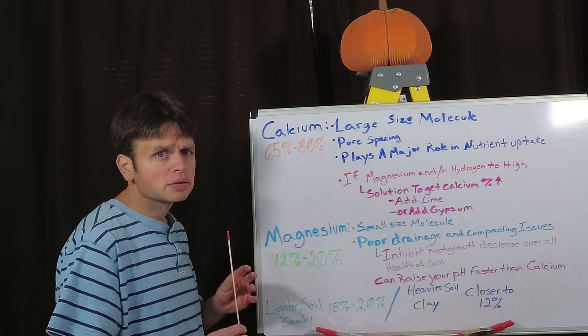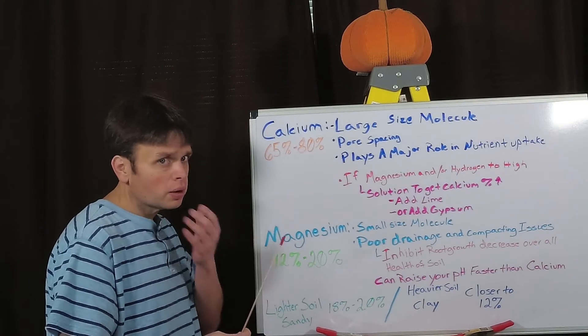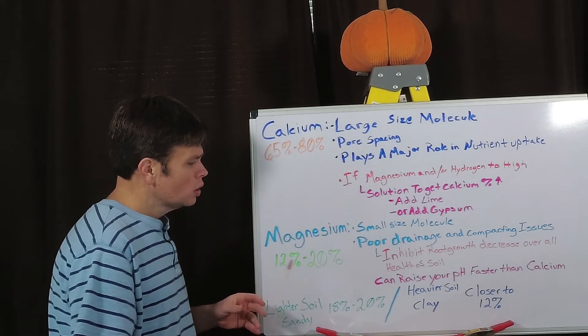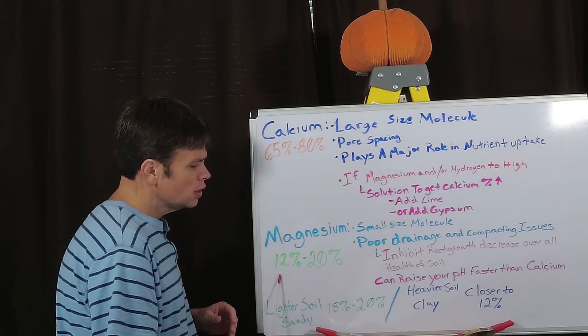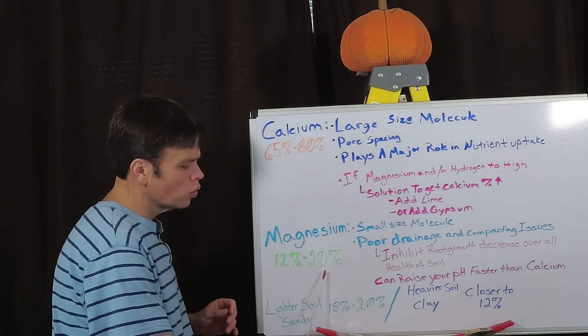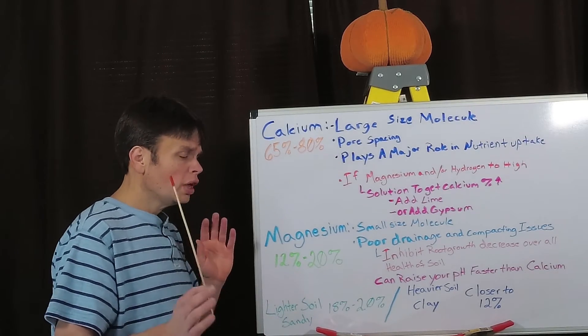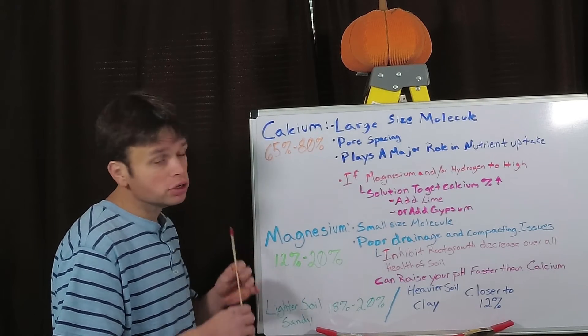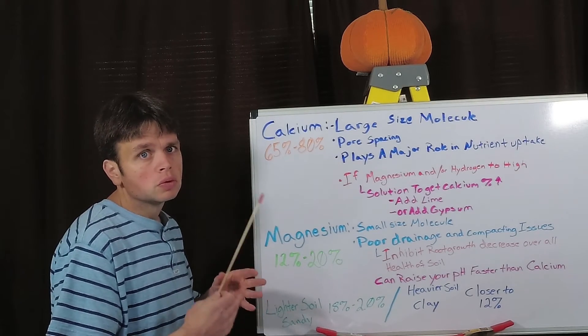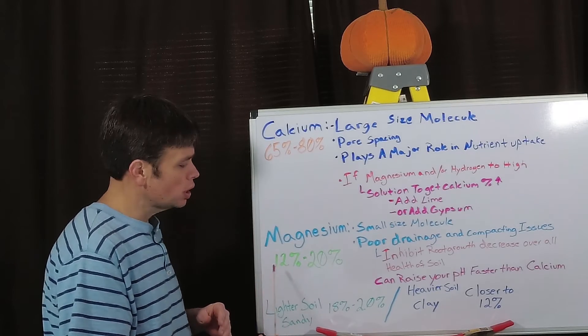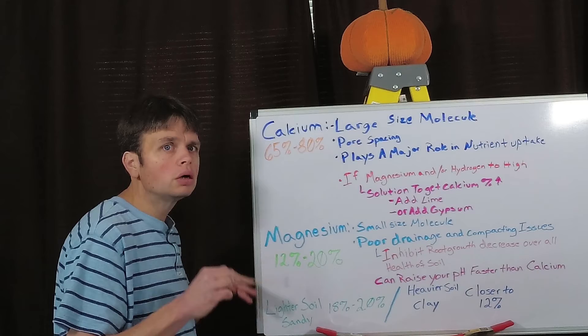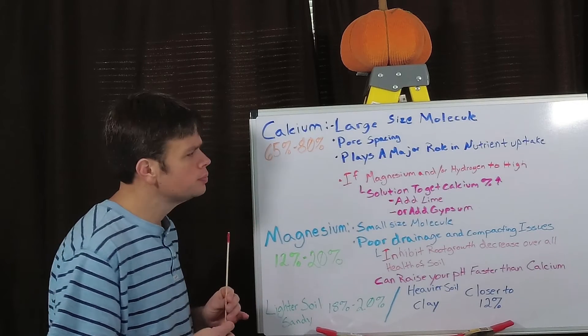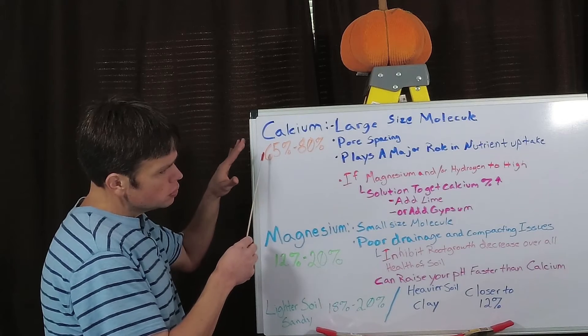And if we remember back to the CEC episode and comparing this to clay, we know how clay holds on to nutrients. We need to, depending on our soil, be closer to one side over the other. So if you have lighter soil like sandy soil, you want to be closer to 18 to 20 percent. And then just the opposite, if you have heavier soil with lots of clay, you want to get as close as you can to 12 percent. But you don't want to go under 12 percent, otherwise you're going to disrupt that whole balance in your soil. So in a nutshell, that's calcium and magnesium.